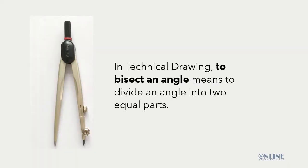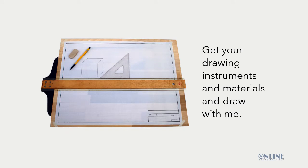In technical drawing, to bisect an angle means to divide an angle into two equal parts. Get your drawing instruments and materials so you can draw with me.